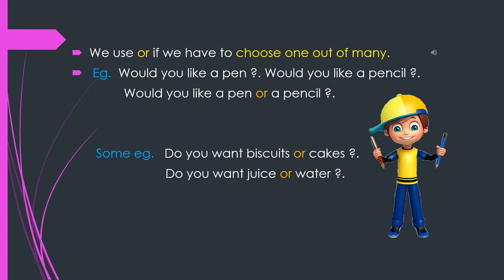Let us see some more examples. Do you want biscuits or cakes? The next one: do you want juice or water? We use the word 'or' to choose one out of many.